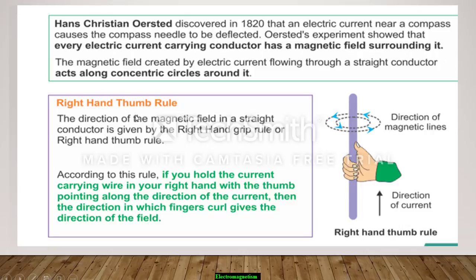Now this right hand thumb rule. Let's see what does it state. Right hand thumb rule gives the direction of magnetic field in a straight conductor by this right hand grip rule.